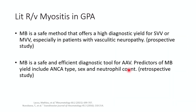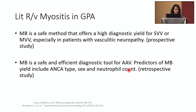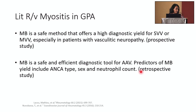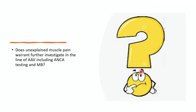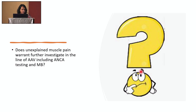This study was backed by several other studies. One prospective study performed muscle biopsy in each suspected patient of small vessel vasculitis and found a significant positivity rate. Another retrospective study evaluated patients with ANCA-associated vasculitis who had muscle biopsies, again with favourable results, noting that predictors of positive muscle biopsy yield included ANCA type — that is MPO-ANCA — female gender, and neutrophil count. This prompts the question: does unexplained muscle pain warrant investigation in the line of ANCA-associated vasculitis, including ANCA and muscle biopsy? In the right clinical context, yes — but not on average.